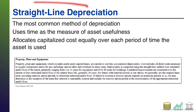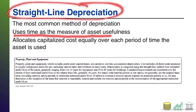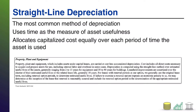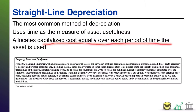What makes straight line so easy to adopt is that it uses time as the spreadable unit. So basically, it's not a matter of thinking this machine will produce 300 units of product, or this building will serve 10,000 customers worth of foot traffic. It's just — we think this machine will last five years, we think this building will last 30 years. You're using time as the measure of asset usefulness, and that time is what you will allocate your depreciable capitalized costs over — and you'll do so equally. That's where the word straight line comes from.